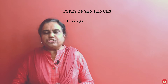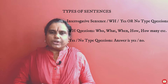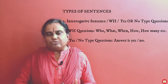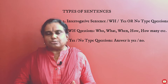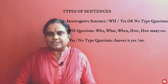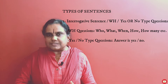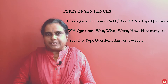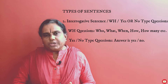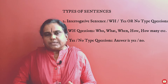The second type is the interrogative sentence — WH questions or yes/no type questions. WH questions use: which, when, what, why, who, how, how many, how much, how often. Yes/no type questions are those where the answer is simply yes or no.